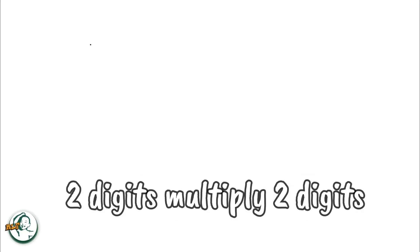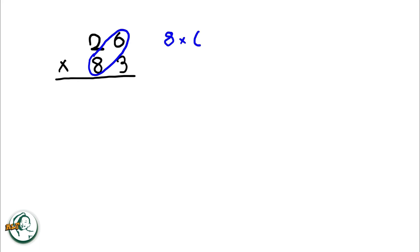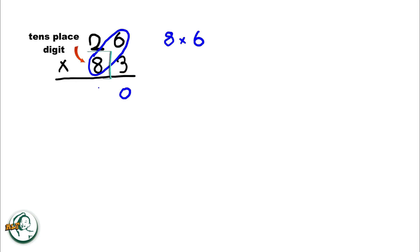Let's dive right into an example: 26 times 83. Firstly, we start by writing down a zero. Then, instead of beginning with the ones place digit, we'll start with the tens place digit. This adjustment simplifies the mental workload and minimizes the chances of mistakes.